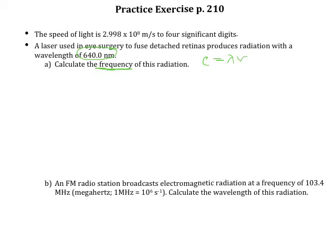So they give us the speed of light in the problem. That's up here. We have all the information we need. We just need to make sure our units are going to work, and then we need to see what this equation looks like when it's rearranged to solve for frequency. So to solve for frequency, it's going to be equal to the speed of light over the wavelength.